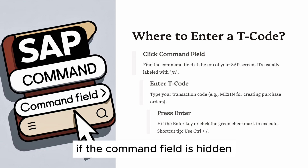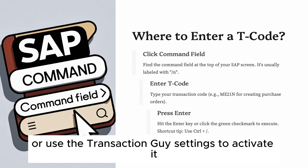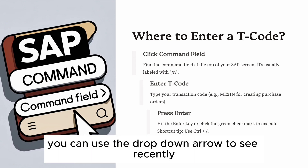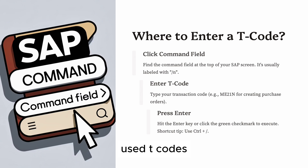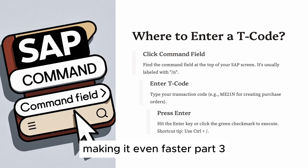Pro tip: if the command field is hidden, click the small square on the top left or use the GUI settings to activate it. You can also use the drop-down arrow to see recently used T codes. SAP supports autocomplete in newer versions, making it even faster.